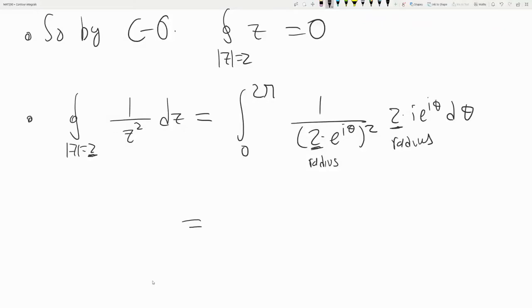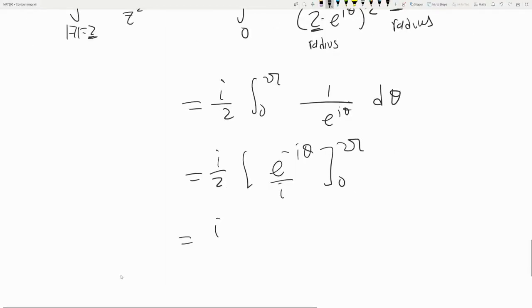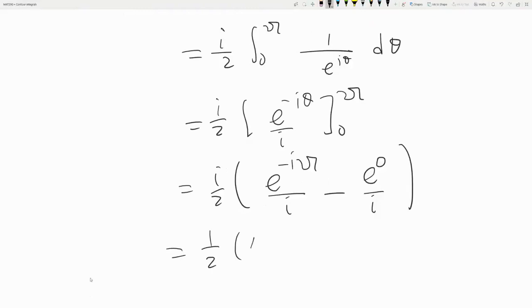Right, so let me do some cancellations. So what do we have? We have i/2 and then e^(iθ). So I claim that this is zero as well, but let's see why. So what do we have? We have e^(-i·2π) and e^0. But these are both one, right, by Euler's formula. So we have 1/2(1 - 1) which is zero.